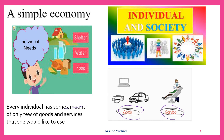Every individual has some amount of only a few goods and services that they would like to use. We will have a full amount of goods. For example, I have a car. Every individual has some amount of only a few goods and services.